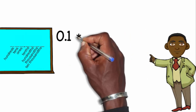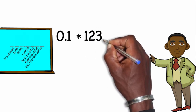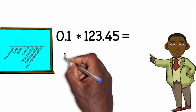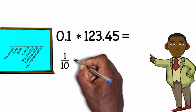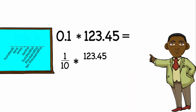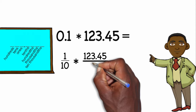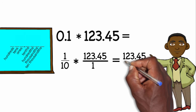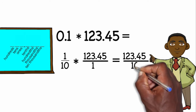The next problem we have is 1 tenth times 123 and 45 hundredths. First thing I'm going to do is turn that 1 tenth to a fraction. And I'm going to change that 123 and 45 hundredths to a fraction by making the denominator a 1. Then I'll multiply top times top: 1 times 123 and 45 hundredths would be 123 and 45 hundredths. 10 times 1 is 10.